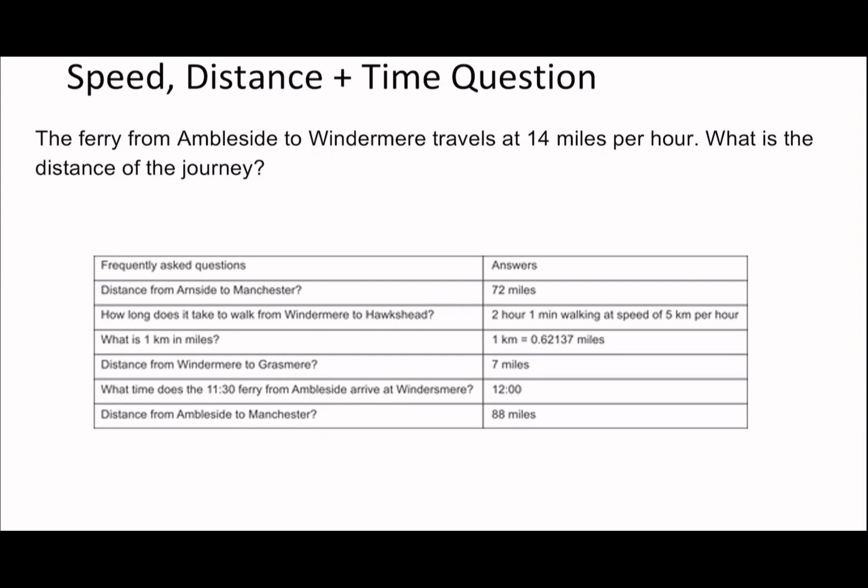Last question: The ferry from Ambleside to Windermere travels at 14 miles per hour. What is the distance? The 11:30 ferry arrives at 12:00, so it travels for half an hour. Speed times time equals distance, so 14 miles per hour times 0.5 equals 7 miles. You can do this in your head.